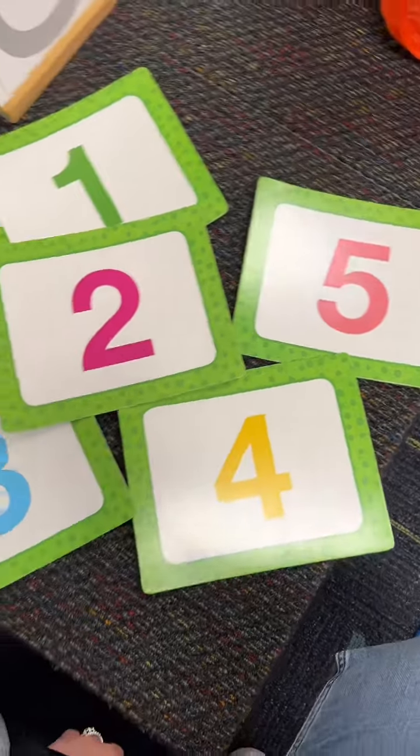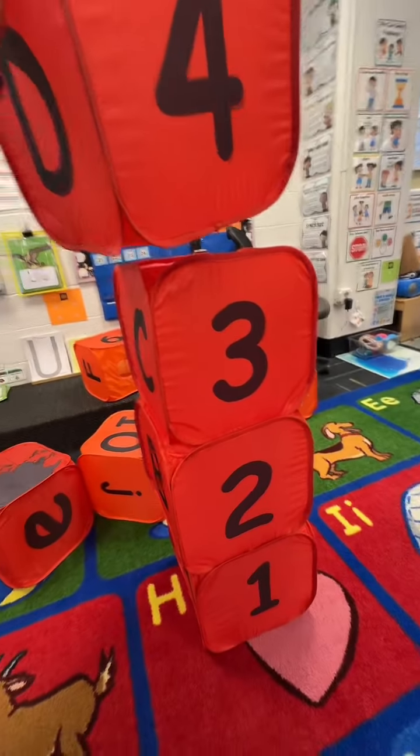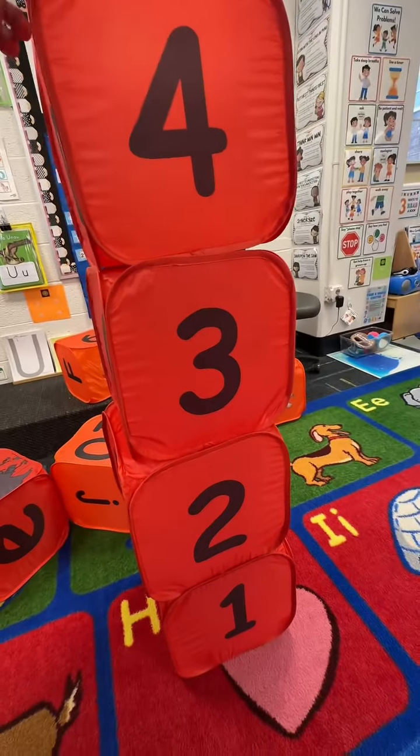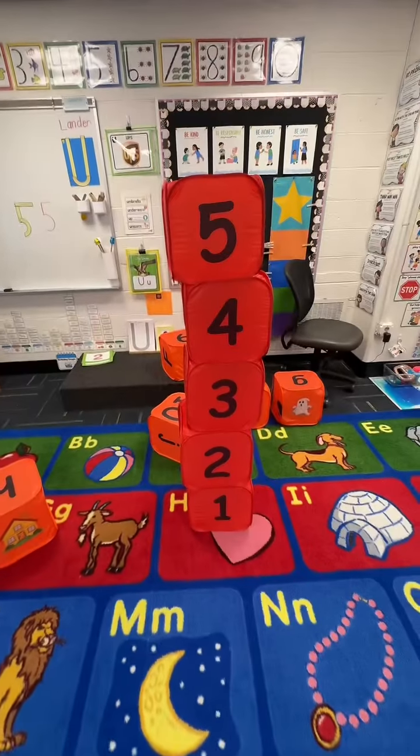I showed my students how it was written with two little lines and one little curve. Little line down, out and around with a belly, and then put on a hat. Then we reviewed all of the numbers we've learned so far.